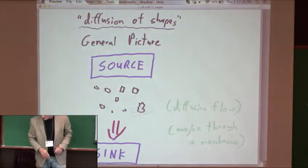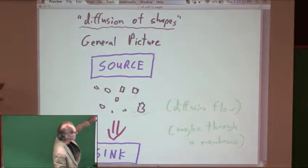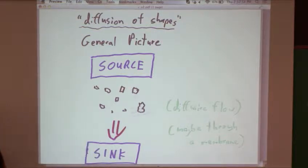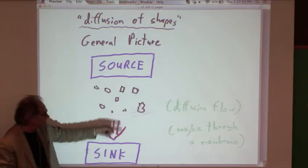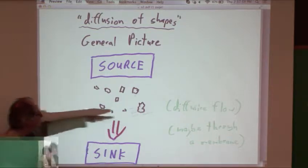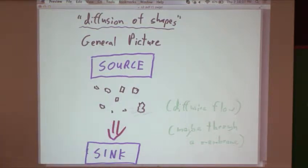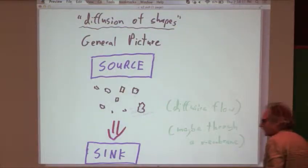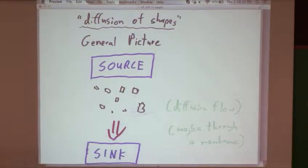Here's the general picture. You've got a source of stuff and a sink of various shapes, and just plain old diffusive flow, maybe through a membrane. No special motive power, pure passive diffusion. So what can happen?